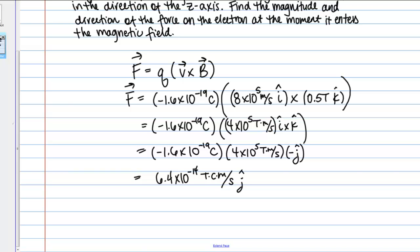And then I have J hat. How did this J hat become positive? Well I have a negative out here from the negative charge, and then a negative J hat. So negative times a negative is positive. That's how I end up with this positive J hat. And then 6.4 times 10 to the negative 14th is the magnitude. What about those units? That's kind of funky.